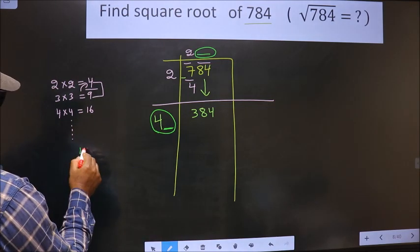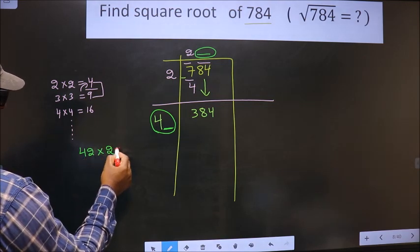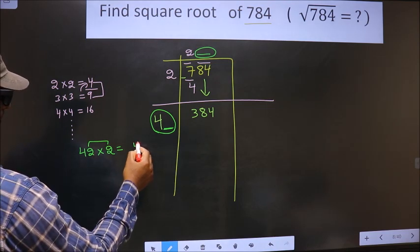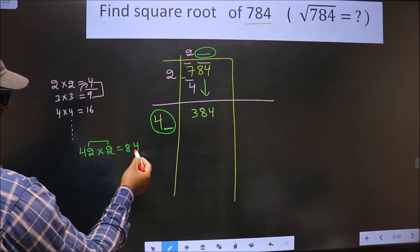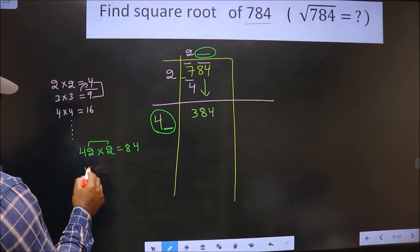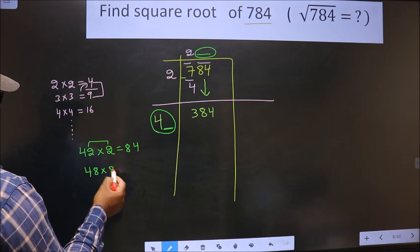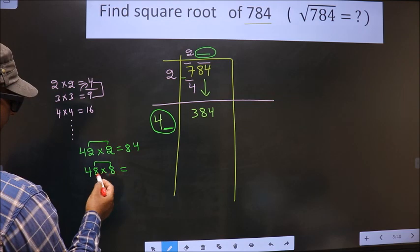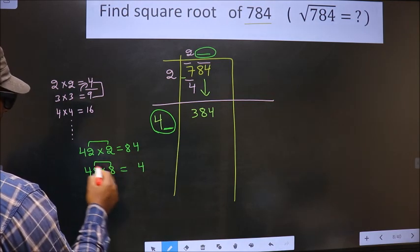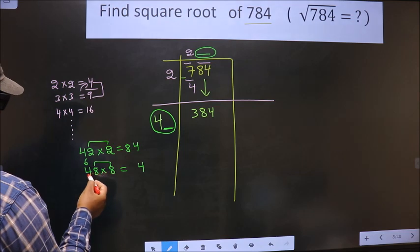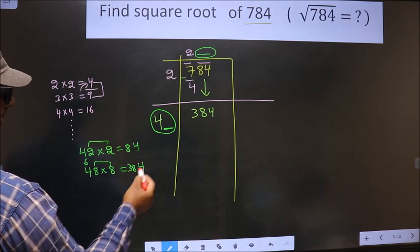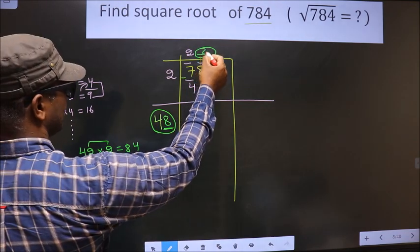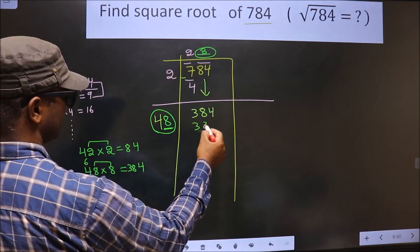If I take 2 here, here also it should be 2. These two have to be same. 2 into 2 is 4, 2 into 4 is 8. 84 is far from here. So if I take 8, 8 times 8 is 64 carried, 8 times 4 is 32 plus 6 is 38. We got exact 384. So here we write 8 and here also 8, and here it is 384.